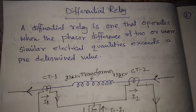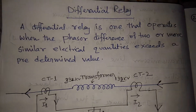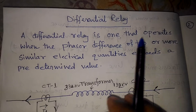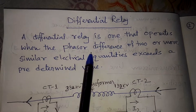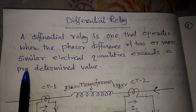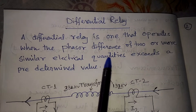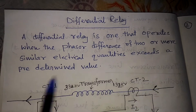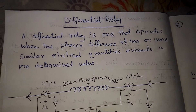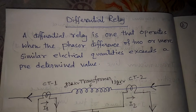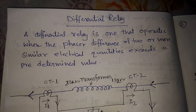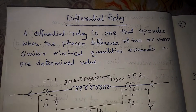Differential means the difference between two. A differential relay is one that operates when the phasor difference of two or more similar electrical quantities exceeds a predetermined value.